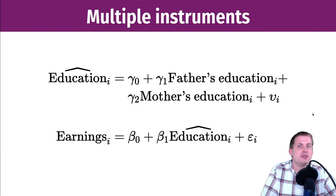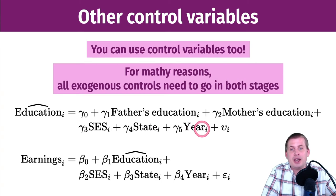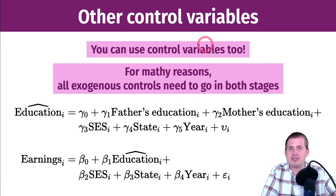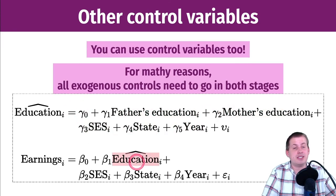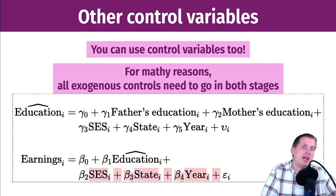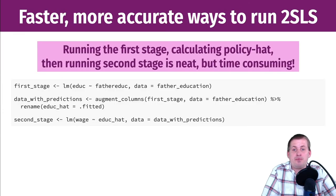You can also include other control variables — socioeconomic status, location, or year — but for mathematical reasons, you have to include them in both stages. In the first stage you have your instruments and control variables; in the second stage you have predicted education (education-hat) plus the same control variables. Just remember: when controlling for something, it goes in both stages.